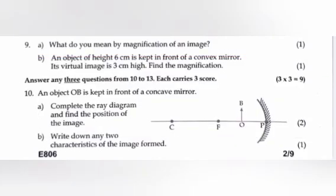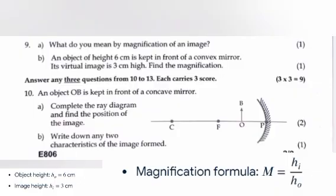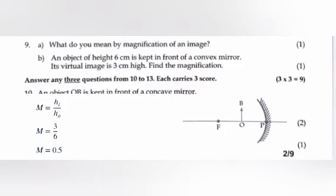B. An object of height 6 cm is kept in front of a convex mirror. Its virtual image is 3 cm high. Find the magnification. Answer: Object height HO is 6 cm. Image height HI is 3 cm. The equation for magnification is M equals HI divided by HO. Apply the magnification formula using the given object and image heights. That is, M equals 3 divided by 6. The answer is 0.5.